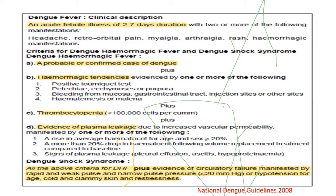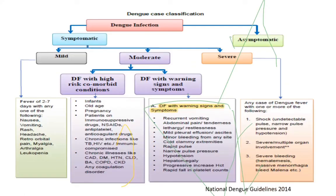Dengue fever is an acute febrile illness with constitutional symptoms of headache, myalgia, etc. Dengue hemorrhagic fever includes fever, constitutional symptoms, hemorrhagic tendencies, thrombocytopenia, and evidence of plasma leakage in the form of rising hematocrit. Dengue shock syndrome includes dengue fever, hemorrhagic manifestations, and circulatory failure. This is the classical dengue picture. But the National Dengue Guidelines 2014 has come out with a different classification.